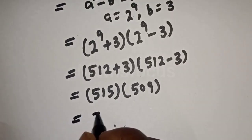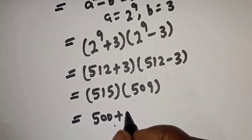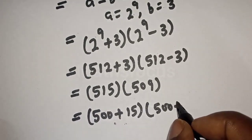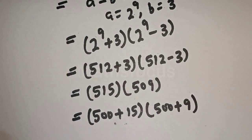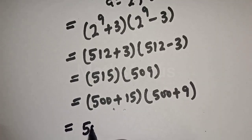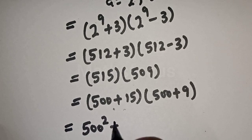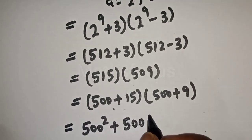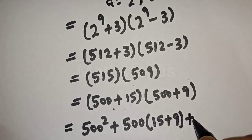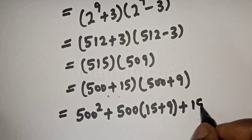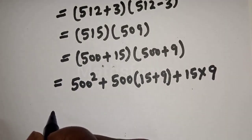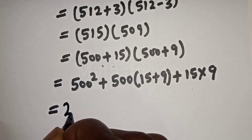Now this can be written as 500 plus 15, bracket 500 plus 9. Then let's multiply out. This is equal to 500 squared plus 500 bracket 15 plus 9, plus 15 multiply by 9. This is equal to 500 squared is 250,000.